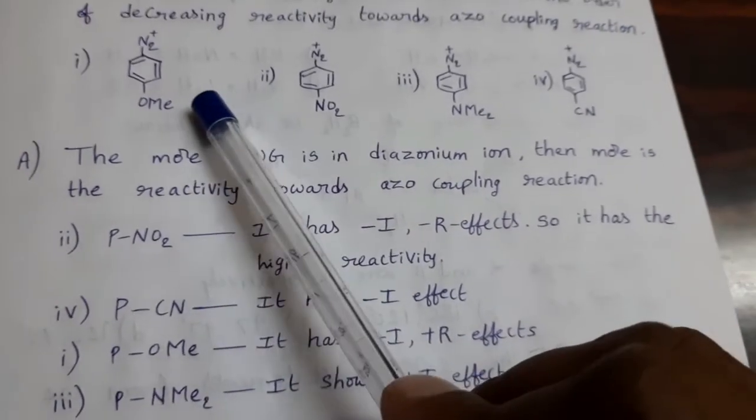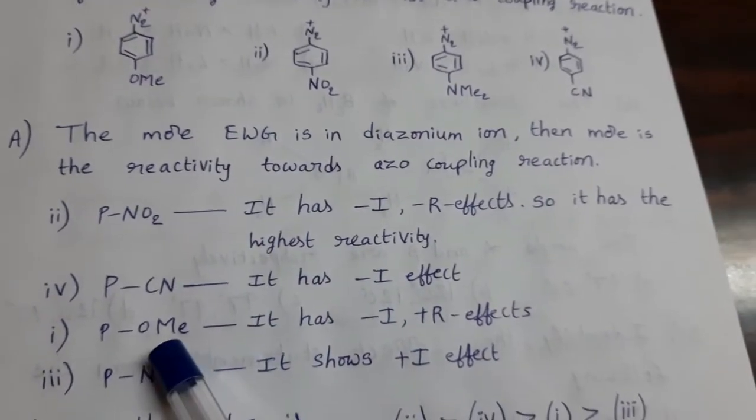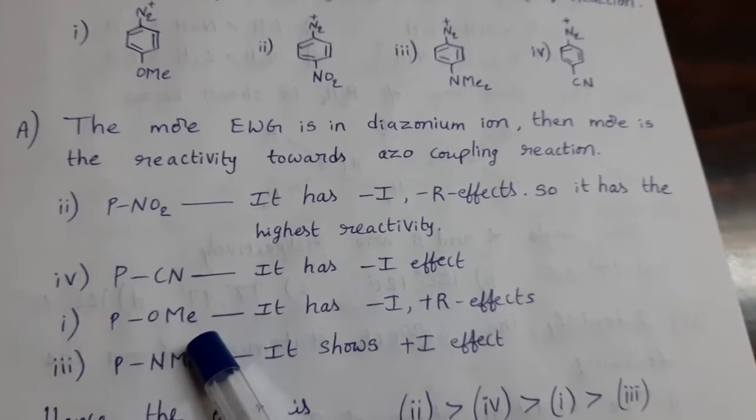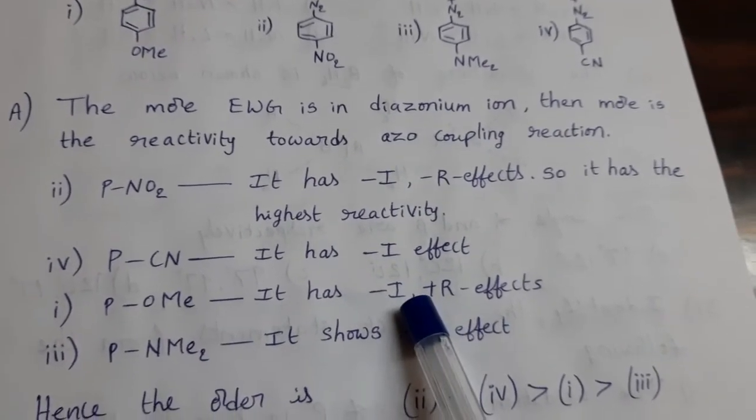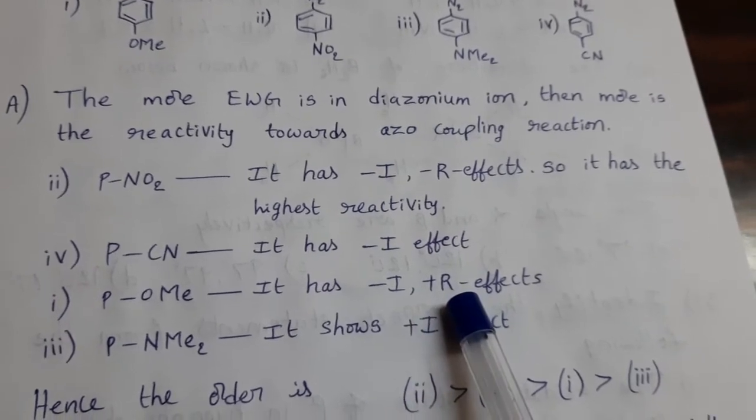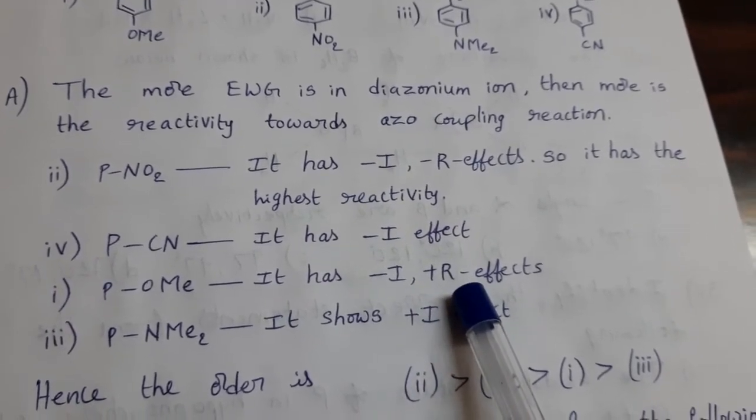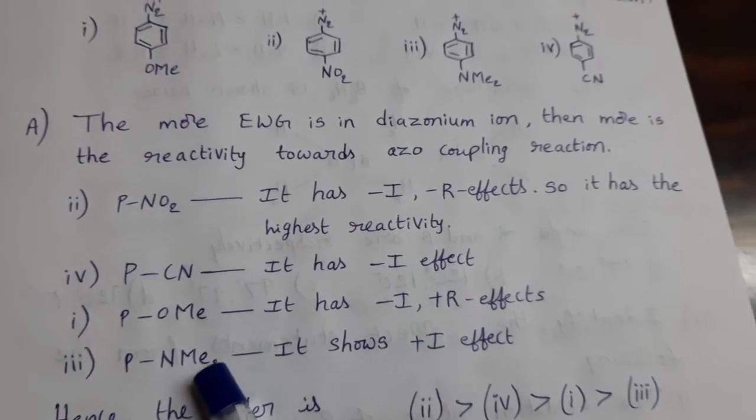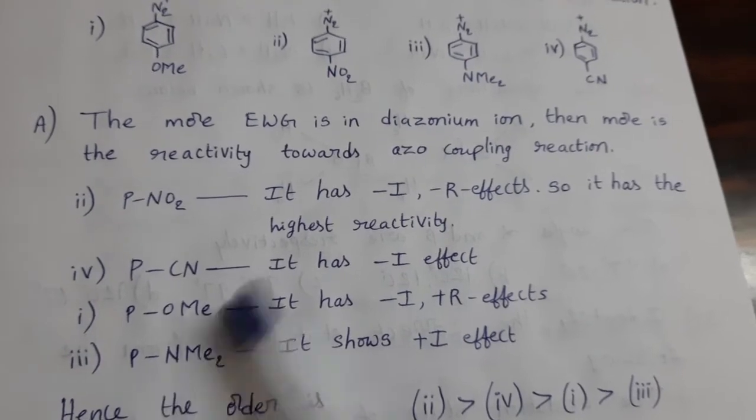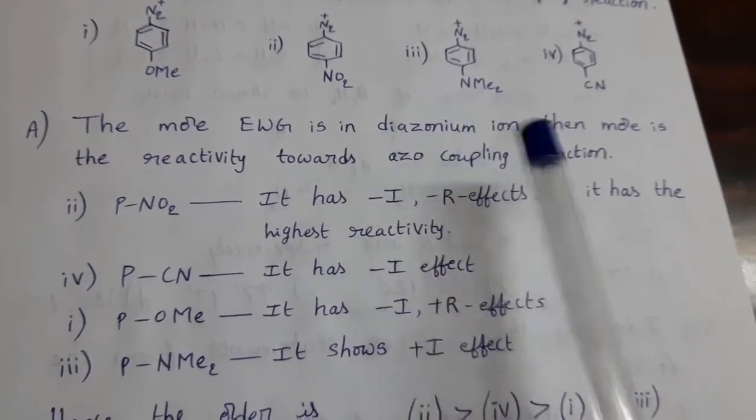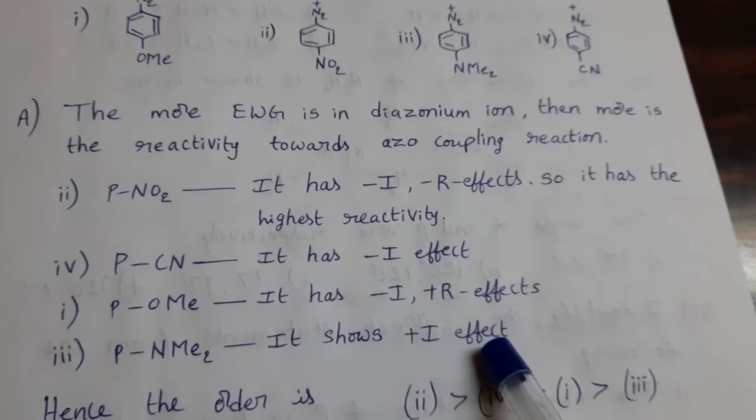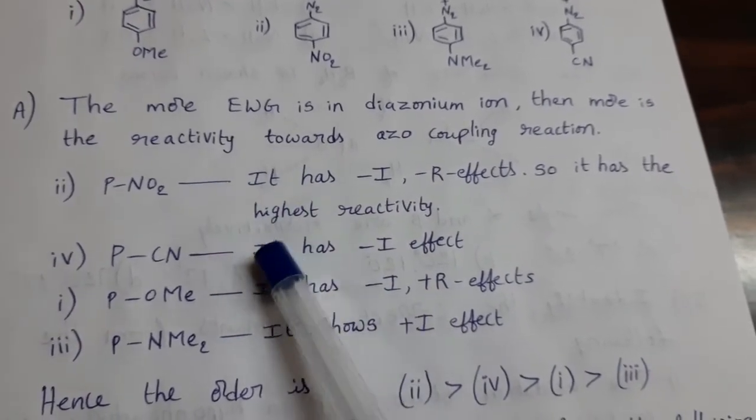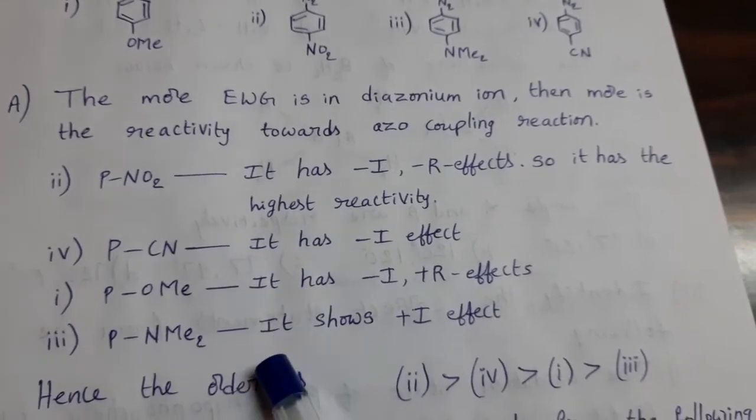Paramethoxy, first ion. In this, methoxy group at para position exhibits different effects: -I effect, negative inductive effect and positive resonance effect, +R effect. And N-dimethyl, two methyl groups attached to the nitrogen at para position in this ion. So it shows only positive effect. Highest reactivity, this NO2 group, and then CN, and then OCH3, and then this one.